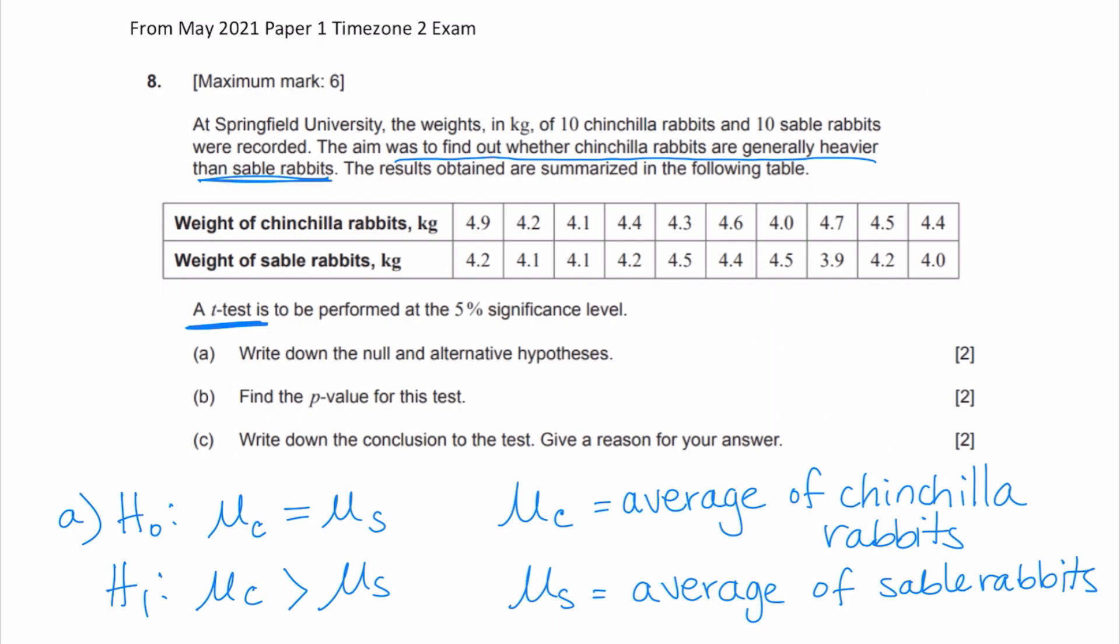It is better for you to write this in symbols. Sometimes the problem will ask you to write this in words. If you write this in words, then you have to take into account that you have to include the word mean, because this is a difference of means test.